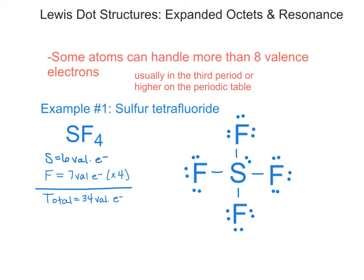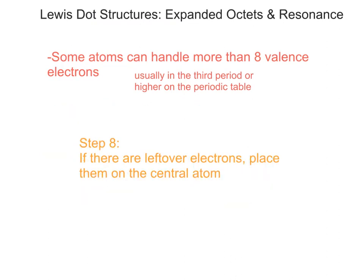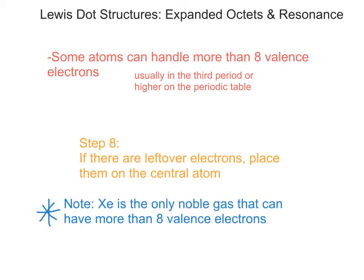In this case, my sulfur will actually have 10 valence electrons, which is okay because sulfur is big enough to handle having more than eight valence electrons. The additional step we can add to our instructions for drawing Lewis dot structures is step eight: if there are leftover electrons, place them on the central atom. Any additional electrons needed to be placed will go on the central atom, as long as it's in the third period or higher.